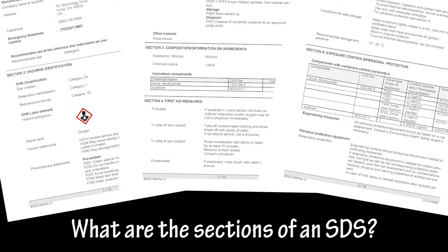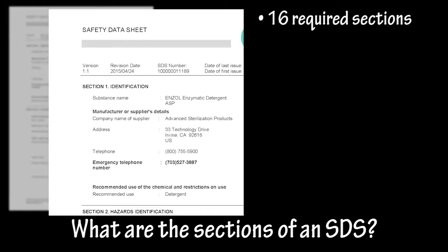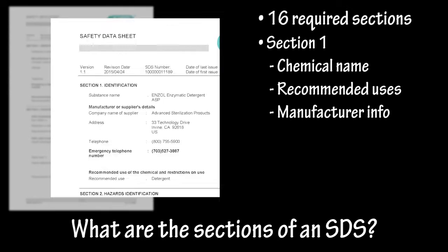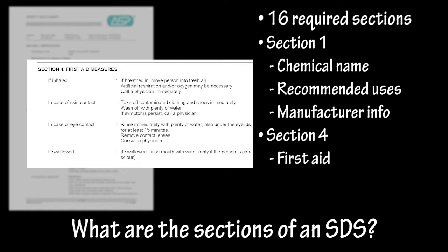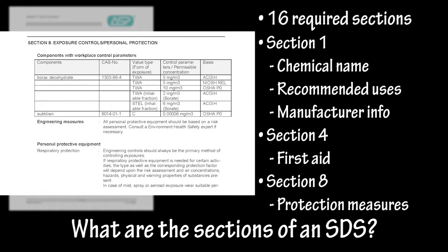What are the sections of an SDS? A safety data sheet has 16 required sections. They are all important for different reasons, but Section 1 is a good starting point. Here you'll find the identifier, which is the chemical name, its recommended uses, and the manufacturer's information. Section 4 features important first aid measures to administer in the event of an overexposure. If you will personally handle the chemical, Section 8 covers the necessary personal protection measures and equipment.